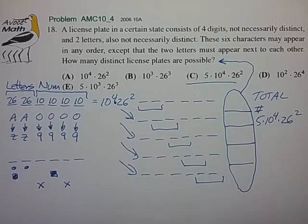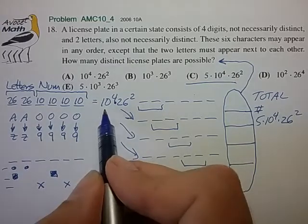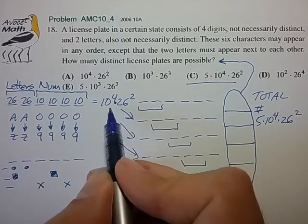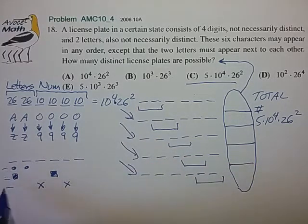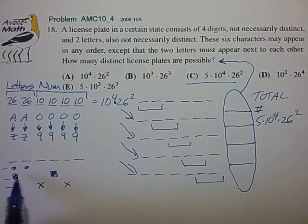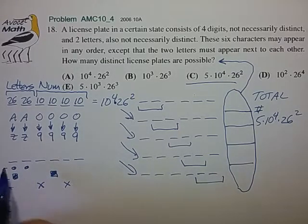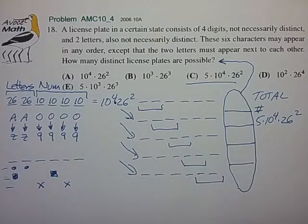For each of these possibilities, the mathematics for each of these cases is identical to what we've done in the first case. We end up with 10 to the fourth times 26 squared possibilities for each of these cases. So what we're really asking is how many different ways can we choose the two locations for the letters out of six possible locations in the license plate number.